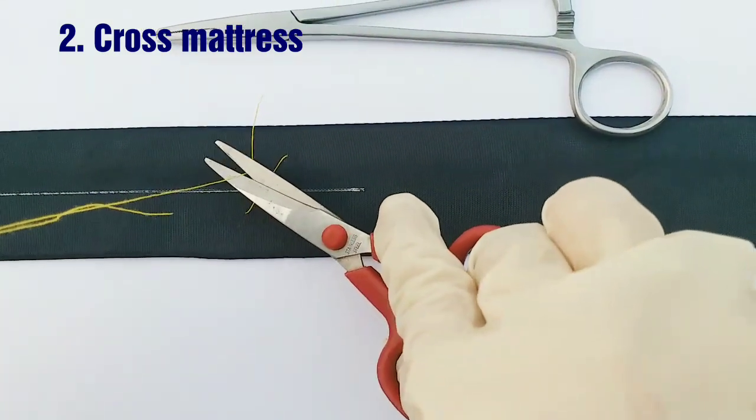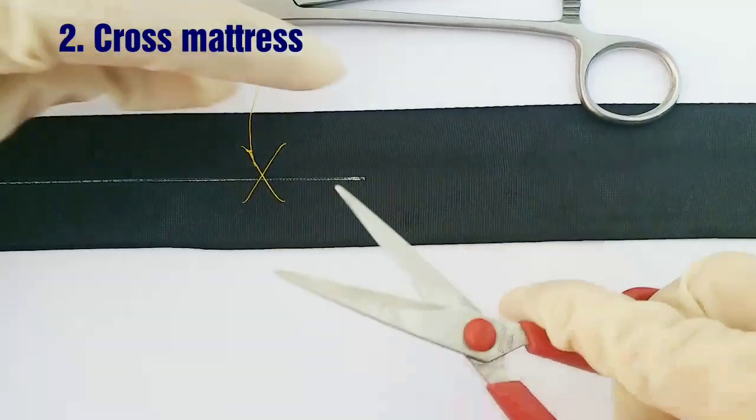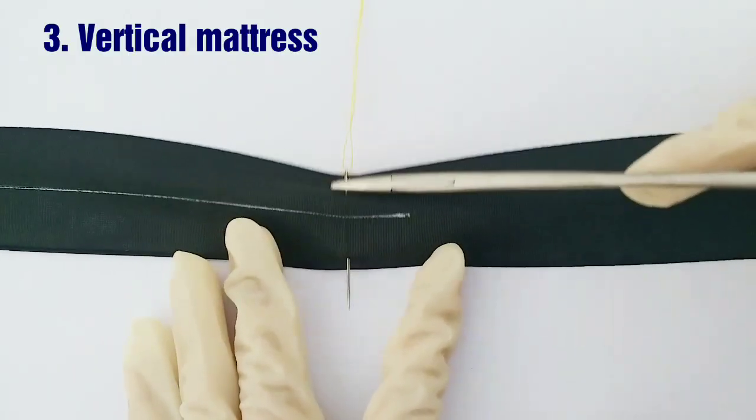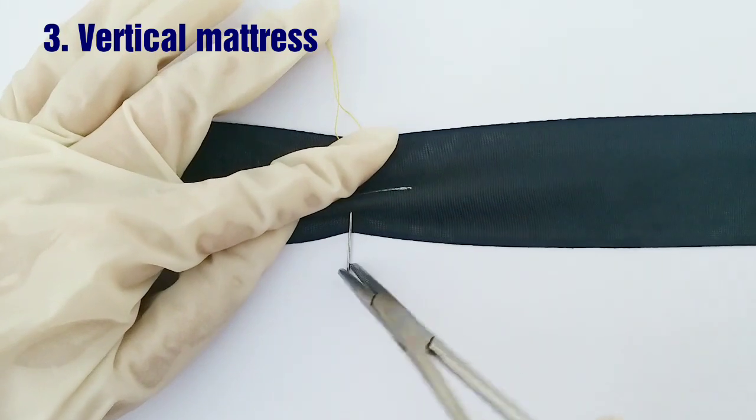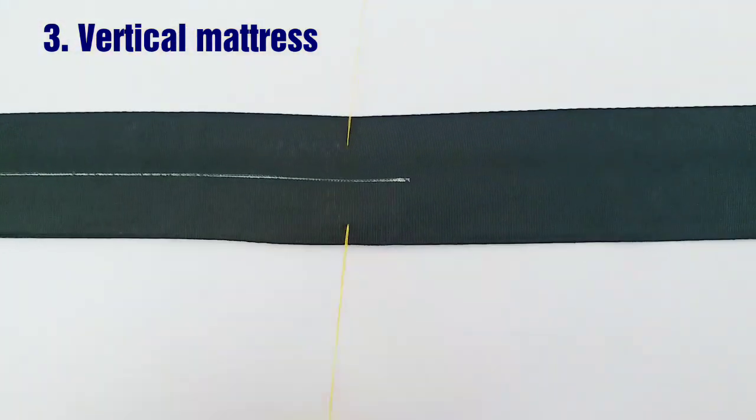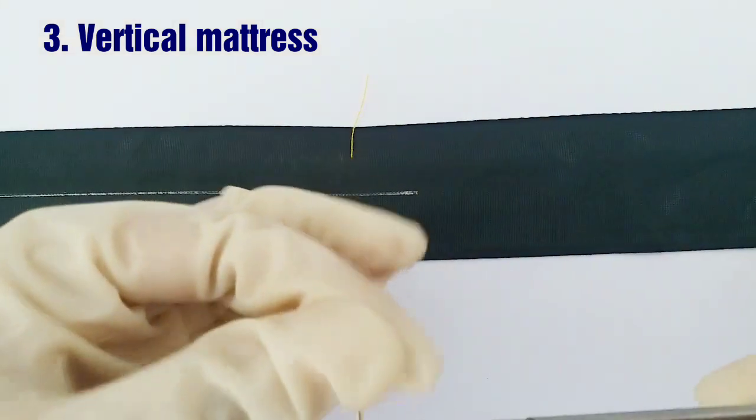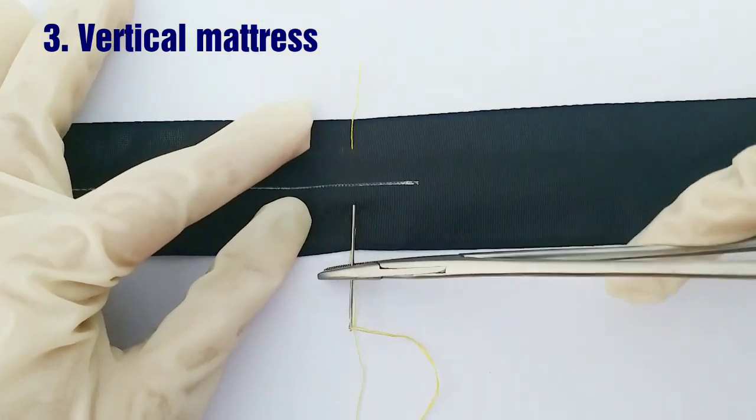And once again, cutting the excess material. Now coming to the last one, vertical mattress. You have to take the needle from one side of the incision to another. Then you have to reverse your needle and take it to the other side of the incision.